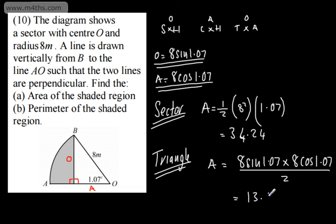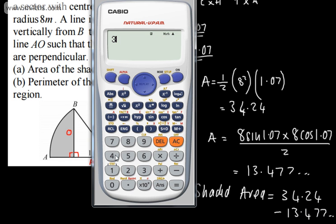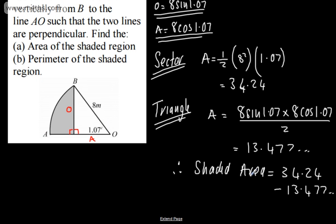13.477, so let's write this on. Therefore, we will have now a shaded area. Shaded area will be equal to 34.24 minus 13.477 and so on. Let's just do that, so 34.24 minus this answer, and that's going to give me 20.8, and I'll give this to 3 significant figures. This is going to be 20.8 metres squared, and that is correct to 3 significant figures.